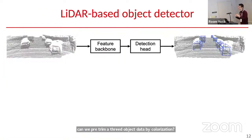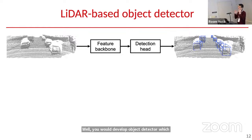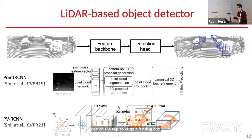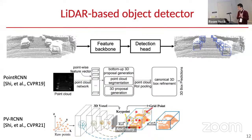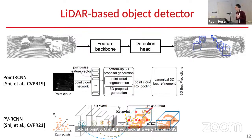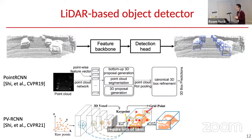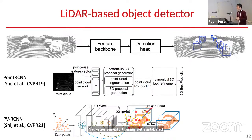For most 3D object detectors, you take a LiDAR point cloud and develop a detector composed of two parts: a feature backbone to extract features from LiDAR points, and a detection head on top to output bounding boxes. Algorithms like PointRCNN and PV-RCNN all have this structure. Training such a model requires lots of labeled data. So we ask: can we do self-supervised pre-training with unlabeled data — which is much easier to collect — to pre-train our feature backbone and reduce labeling effort?